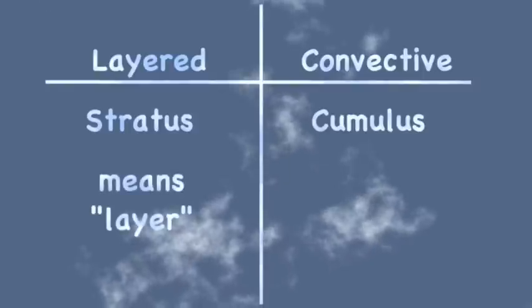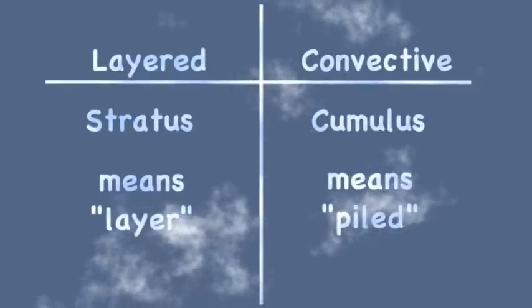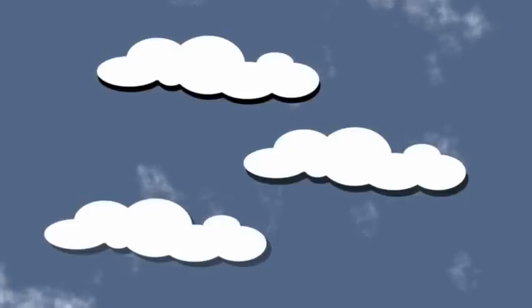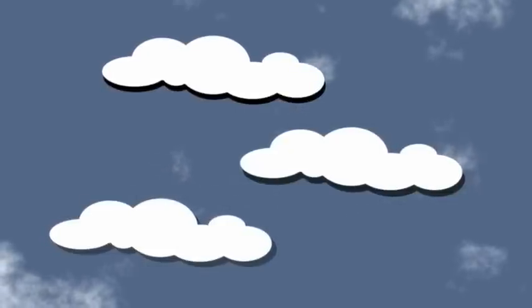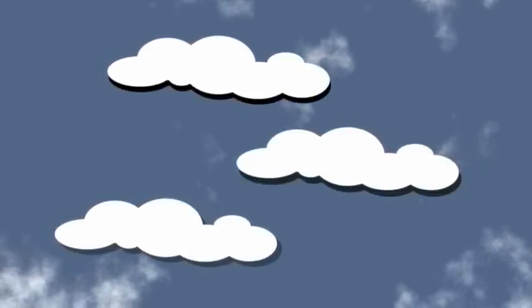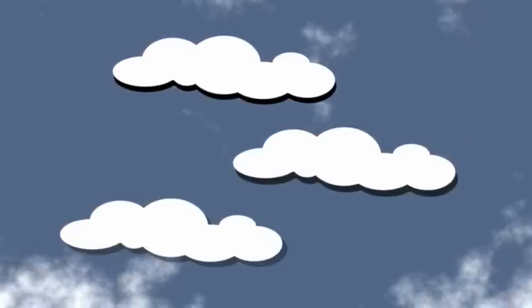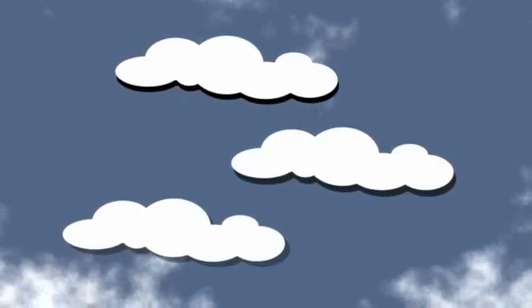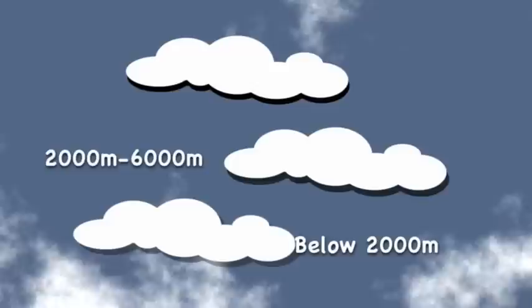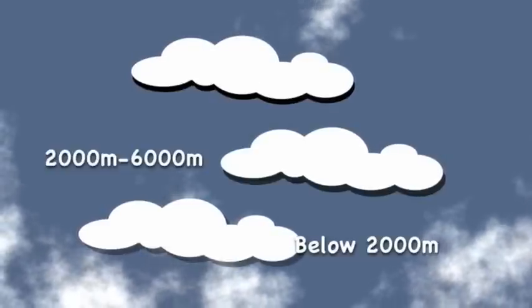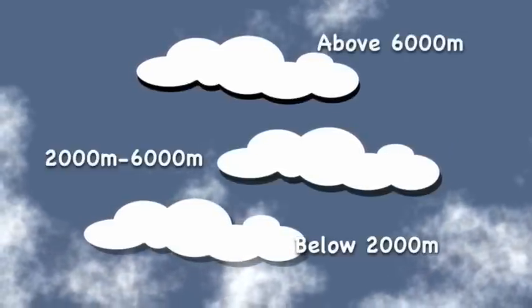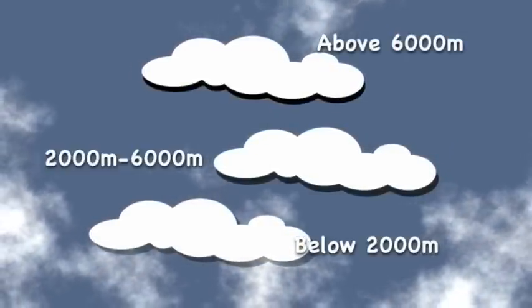Stratus means layer in Latin. Cumulus means piled up in Latin. These two cloud types are divided into three more groups by their altitude, or how high the cloud is. Low clouds have bases below 2,000 meters. Middle clouds have bases between 2,000 and 6,000 meters. And high clouds have bases above 6,000 meters. Within the different altitude ranges, a number of different types of clouds can exist.